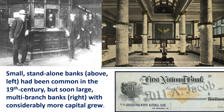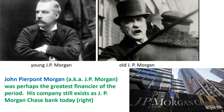Small standalone banks had been very common, but now in the late Industrial Revolution of the 19th century, you start seeing large multi-branch banks with considerably more capital to loan. John Pierpont Morgan — JP Morgan — was the big winner in the banking business, probably the greatest financier of the Industrial Revolution. His company still exists as JP Morgan Chase Bank today.